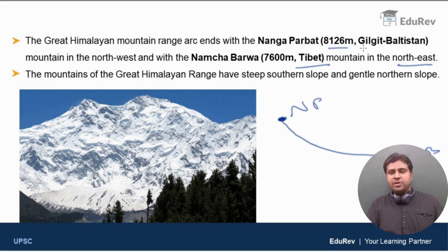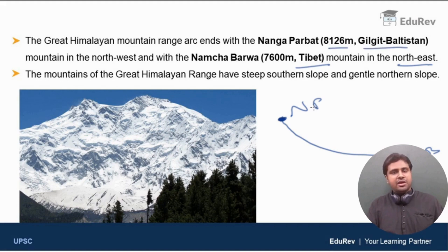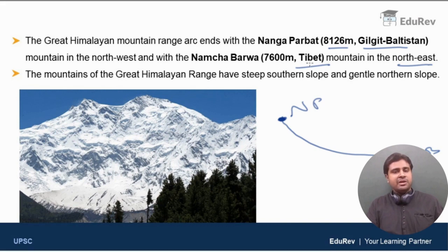Nanga Parbat is situated in the Gilgit-Baltistan area of Kashmir in the Northwest. In the Northeast, the arc ends at the mountain Namcha Barwa, with an elevation of 7600 meters, present in the Tibet region.